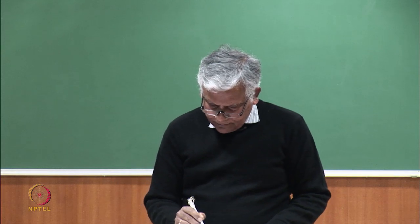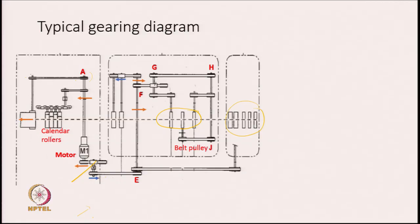Whatever the direction of rotation of this pulley, the same is the direction of rotation of pulley E. On this pulley, this shaft is going from one end to the other end, and therefore this shaft is turning in the same direction as the blue arrow. So the blue arrow direction and this direction are all basically the same — they are all rotating in the same direction.